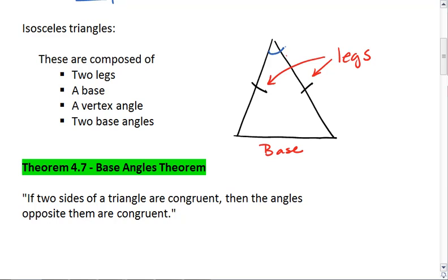The angle in between the two legs is our vertex angle. While the other two angles are our base angles. Those are the four parts of an isosceles triangle.